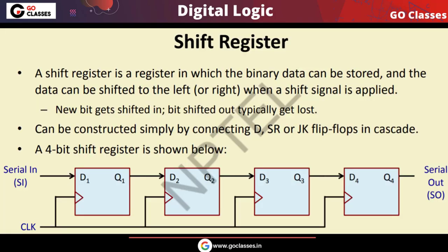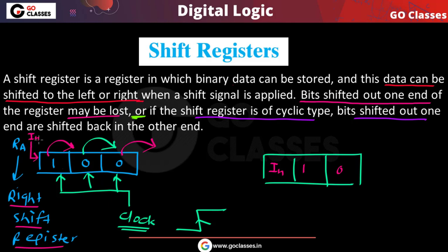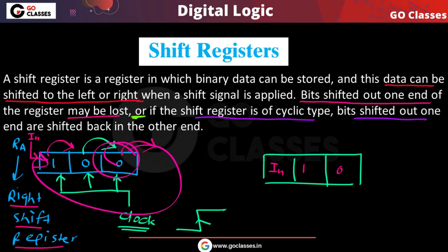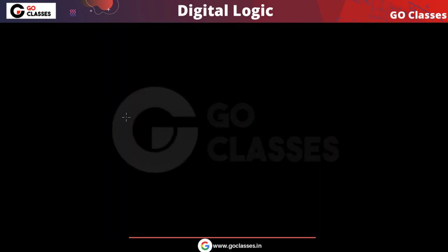The definition is clear: a shift register is a special type of register in which data can be stored and shifted to the left or right when a signal is applied. New data is inserted from one end, and from the other end the data may be lost or fed back. Now let's take an example of a shift register implementation.